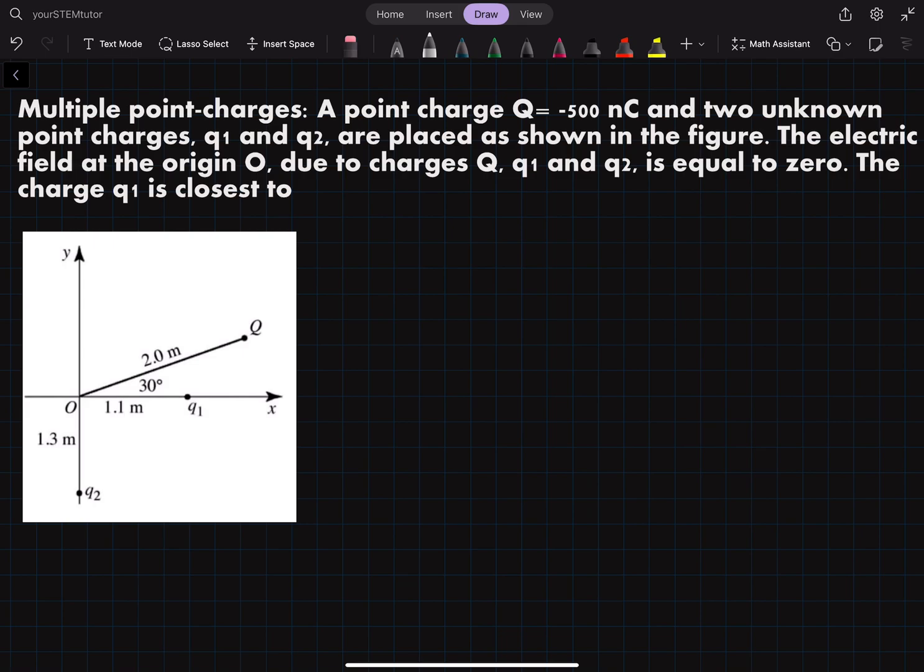So here we're going to use this formula. The vector of our electric field is equal to k times q divided by our radius squared.